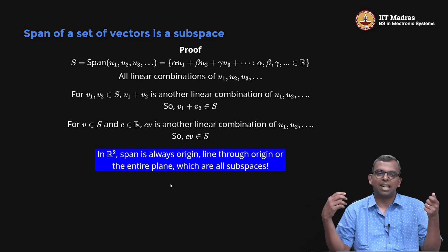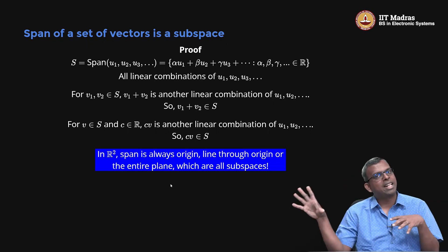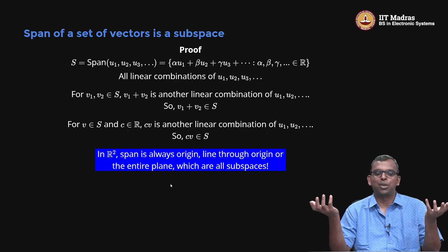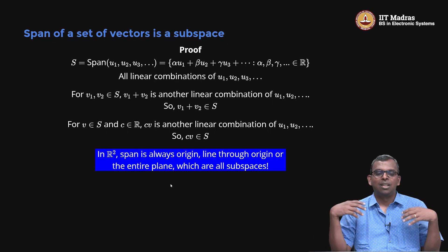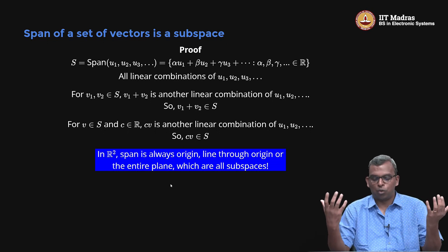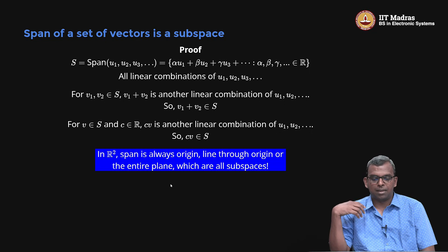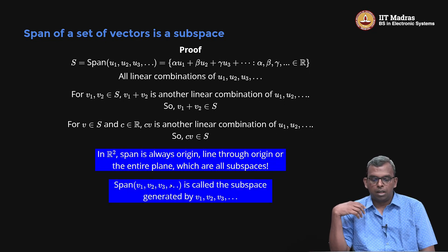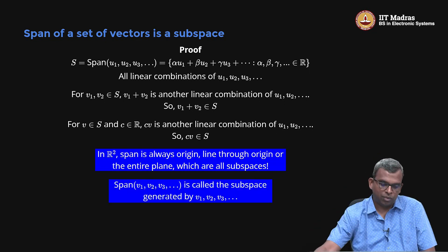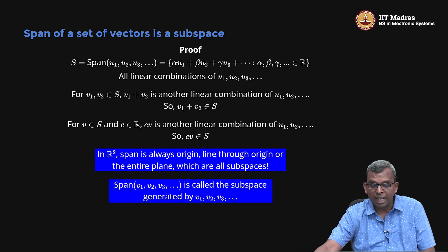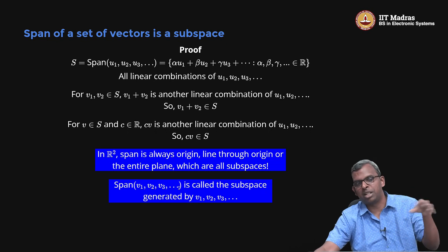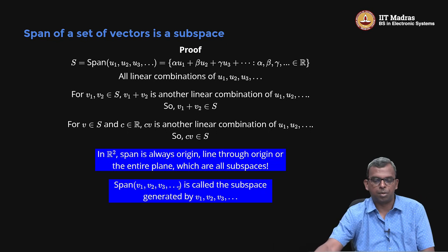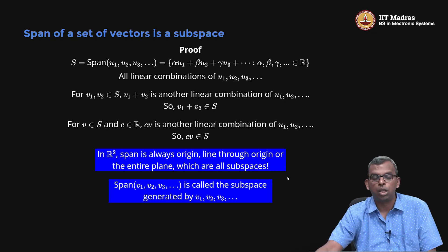The span of any set of vectors in R2 can only be the origin, a line through the origin, or the entire plane — nothing else is possible. The span of v1, v2, v3, and so on is called the subspace generated by v1, v2, v3. Those vectors and all their linear combinations generate the entire subspace. This is the span and its important connection to subspaces.